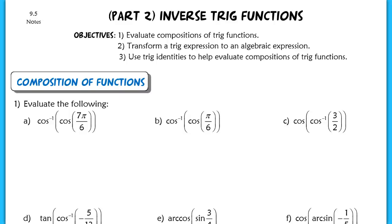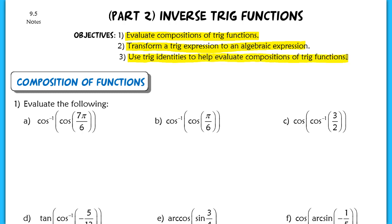This lesson is part two of section 9.5. We're going to continue to look at inverse trig functions and evaluate the compositions of those trig functions, but now we're going to increase the difficulty a little bit. We'll also transform trig expressions into algebraic expressions in terms of x or y, and use trig identities to help us evaluate compositions of trig functions when they get tougher.